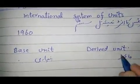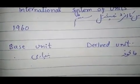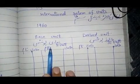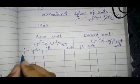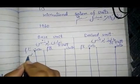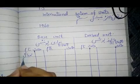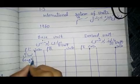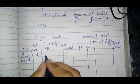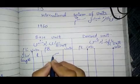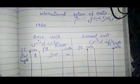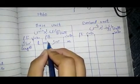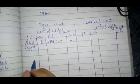I am going to draw a table. I will tell you the base quantities and their units. First, we start with length. Length has the symbol small 'L'. Its base unit is the meter, represented by 'm'. Symbols are important — when we write a value, we just write the symbol of the unit.